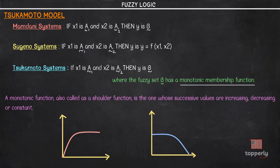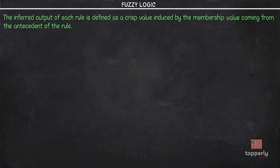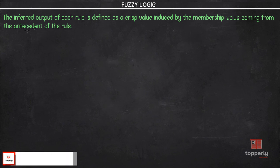For example, as you can see here, we have two graphs. In the first graph, the function is increasing and then constant. In the second graph, it is constant and then decreasing. These functions represent a shoulder type figure and hence it is also called a shoulder function. So in the case of the Sukumoto system, our fuzzy set B will have a monotonic membership function. In a monotonic membership function, the inferred output of each rule is defined as a crisp value induced by the membership value coming from the antecedent of the rule.